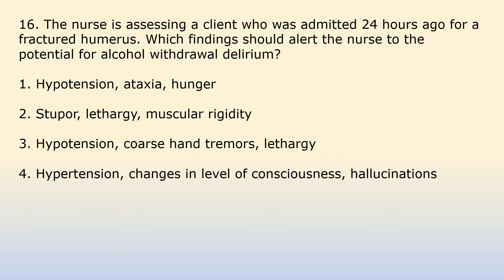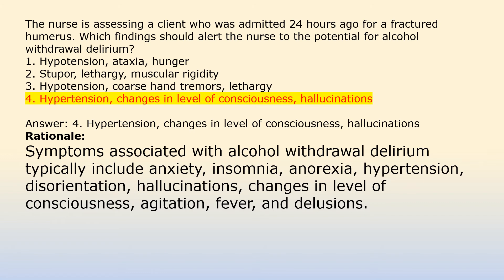The nurse is assessing a client who was admitted 24 hours ago for a fractured humerus. Which findings should alert the nurse to the potential for alcohol withdrawal delirium? Option 1: Hypotension, ataxia, hunger. Option 2: Stupor, lethargy, muscular rigidity. Option 3: Hypotension, coarse hand tremors, lethargy. Option 4: Hypertension, changes in level of consciousness, hallucinations. Answer 4: Hypertension, changes in level of consciousness, hallucinations. Symptoms associated with alcohol withdrawal delirium typically include anxiety, insomnia, anorexia, hypertension, disorientation, hallucinations, changes in level of consciousness, agitation, fever, and delusions.